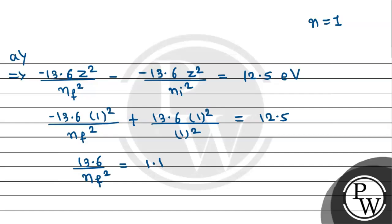We will simply get 13.6 by n_f whole square equals 1.1, because 13.6 minus 12.5 gives 1.1. From here n_f squared equals 12.36. Taking root on both sides, we get n_f equals 3.51. Since a state cannot be a fractional number, it must be an integer. So n_f equals 3. This is the answer for part A.